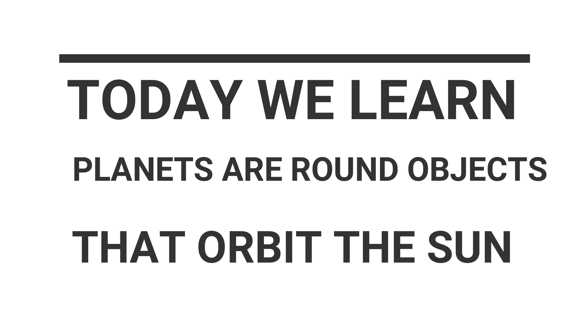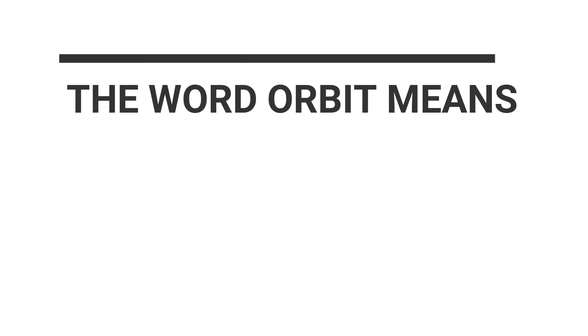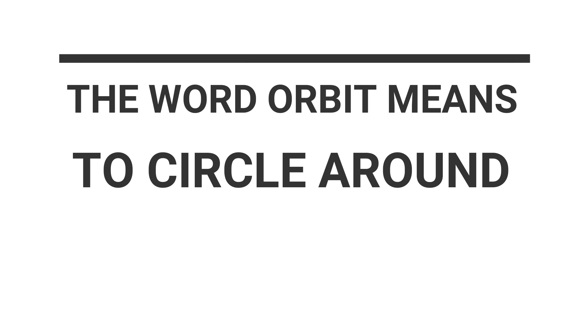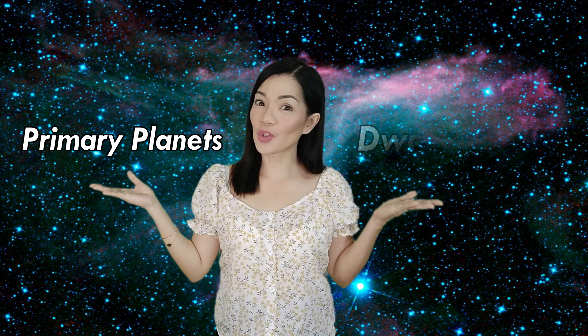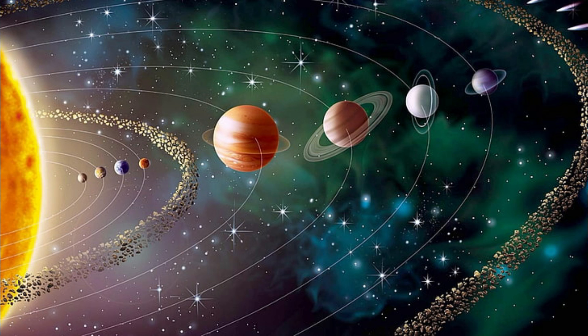You have done such an amazing job with me today. Today, we learned planets are round objects that orbit the Sun. The word orbit means to circle around. Basically, planets are round objects that go around the Sun. And we learned there are two types of planets. So, there are primary planets and there are dwarf planets.